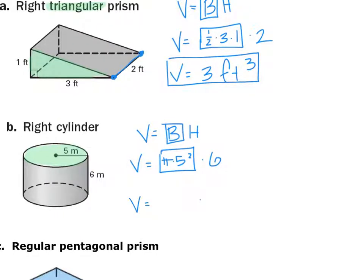I punch that into my calculator. Pi times 5 squared times 6. And I get 471.239 meters cubed. Volume is cubed, always.